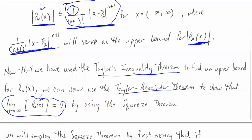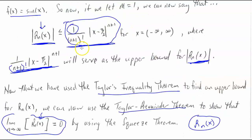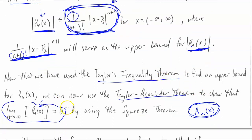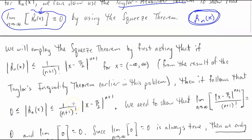Now we're going to use the Taylor Remainder Theorem to show that the limit of whatever this is should go to zero by using the squeeze theorem. The idea is: we don't know exactly what R sub N of X is, but we know that however it behaves, it should behave like what we have here. From a common sense standpoint, the behavior of the error at its lowest should be zero. So we have zero as our lower bound for the absolute value of the error.